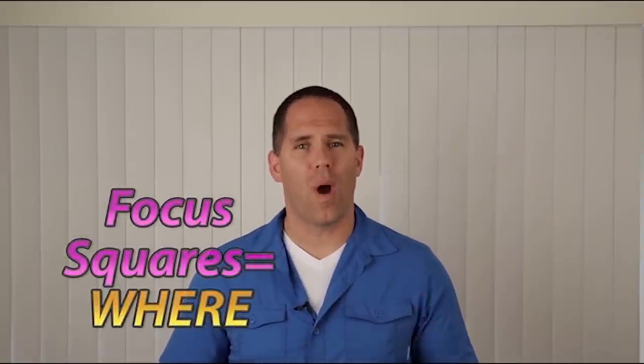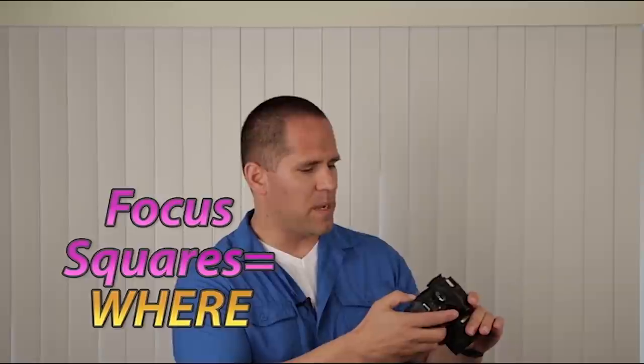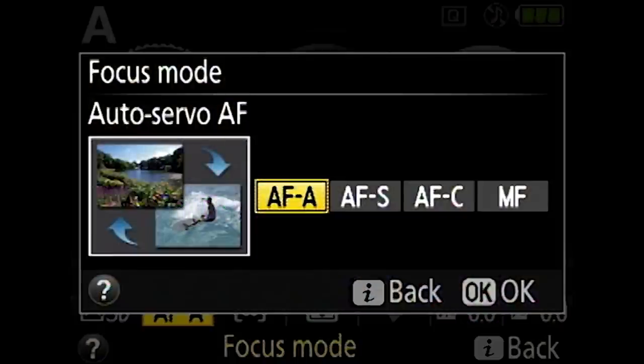So that is the how the camera focuses when we push the shutter button halfway down. It's either a one-time focus or it's a continual focus over and over again. Now let's talk about the where, and what I would recommend right now is making sure that your camera's autofocus mode is on AFA and I'll tell you why in just a second.